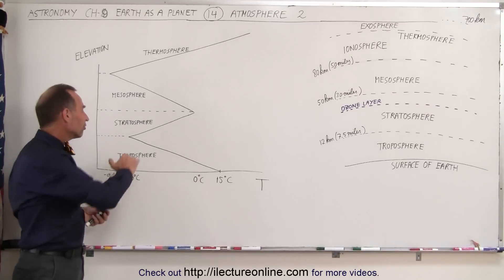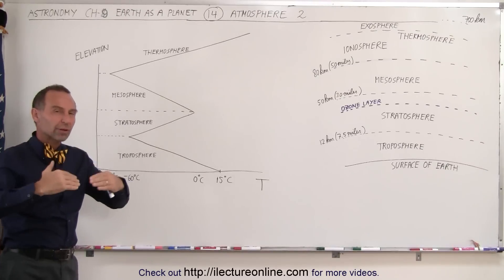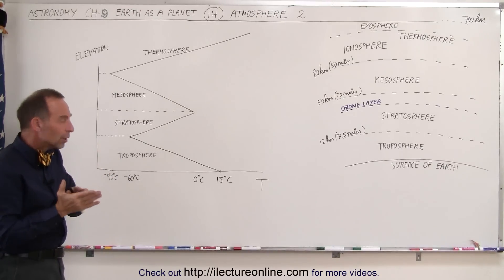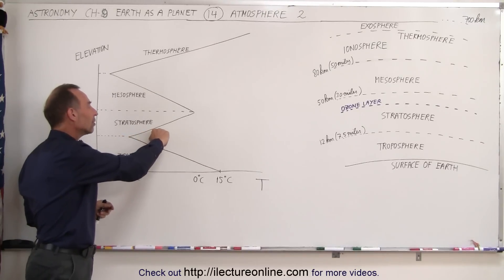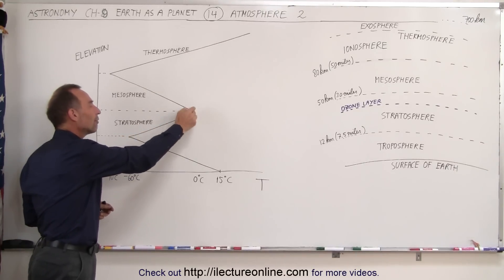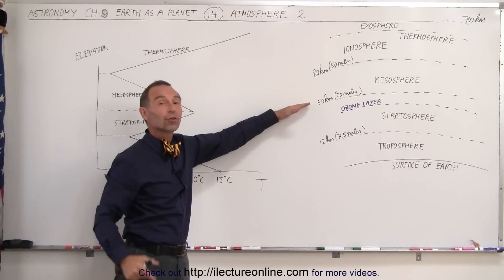But then, strangely enough, the temperatures begin to increase again. Even though the air begins to be extremely rarefied, the atmosphere gets to be really thin, as you go higher up in the stratosphere, you can see that the temperature begins to increase again and reaches a temperature of about 0 degrees at an altitude of about 50 kilometers or 30 miles.